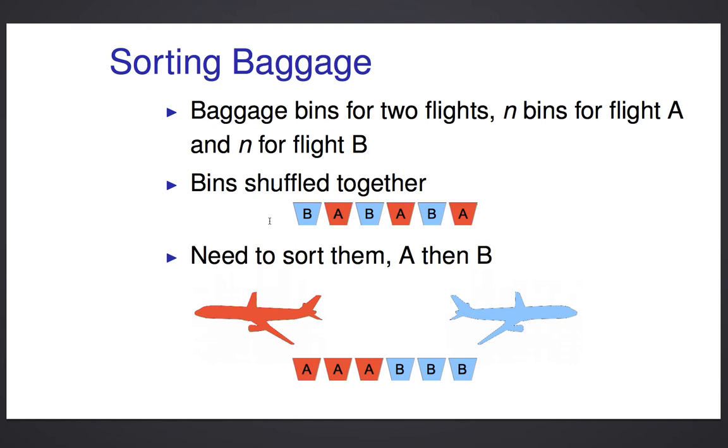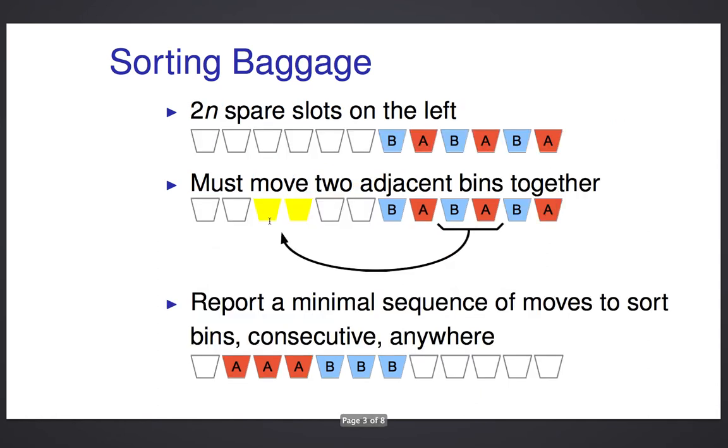The idea is that you've got baggage bins for two flights, flight A and flight B, and you've got N bins for each flight, but they're all shuffled together. So you've got a bin for B, followed by a bin for A, then a bin for B, and your job is to sort them so that all the A bins are on the left and all the B bins are on the right, so the planes can leave each carrying their own luggage.